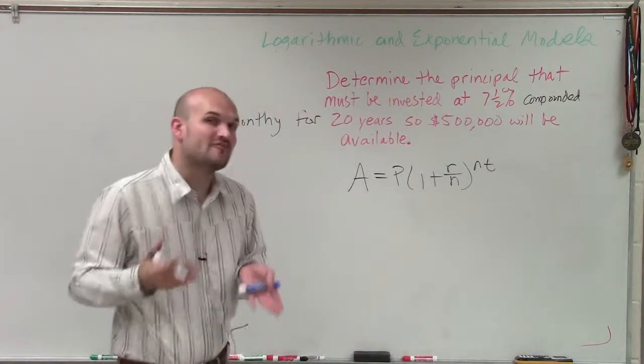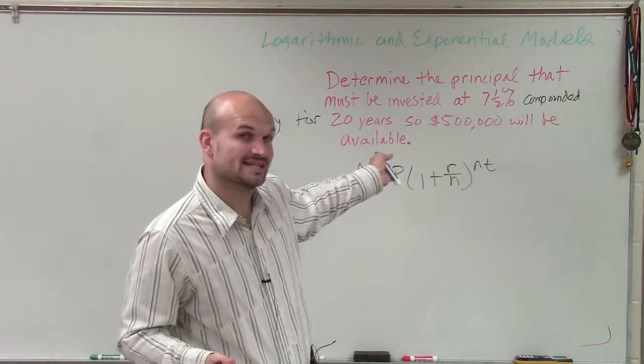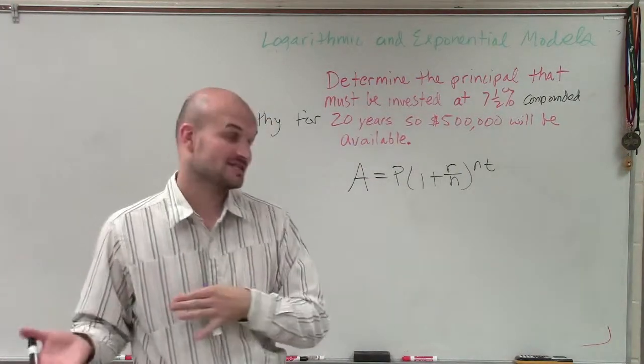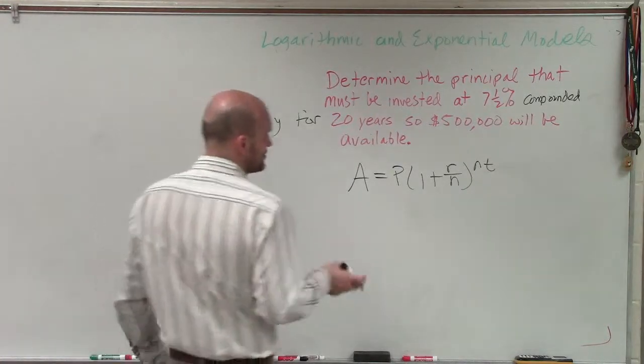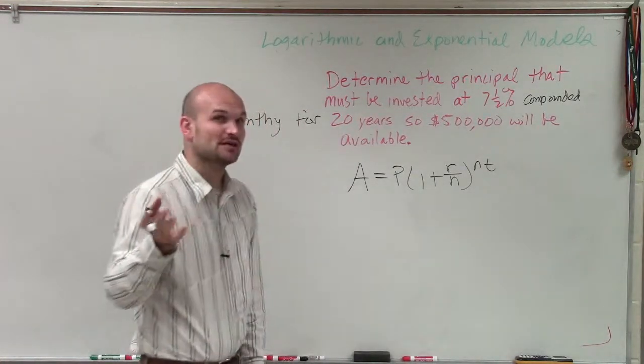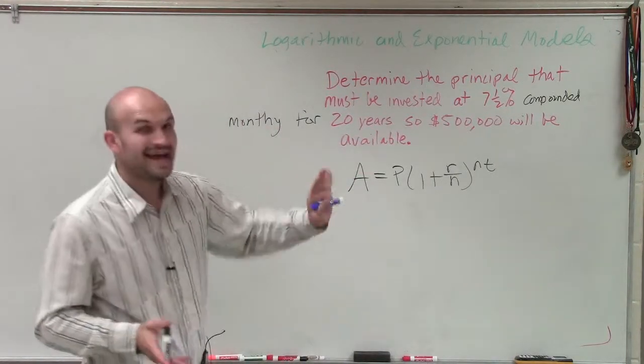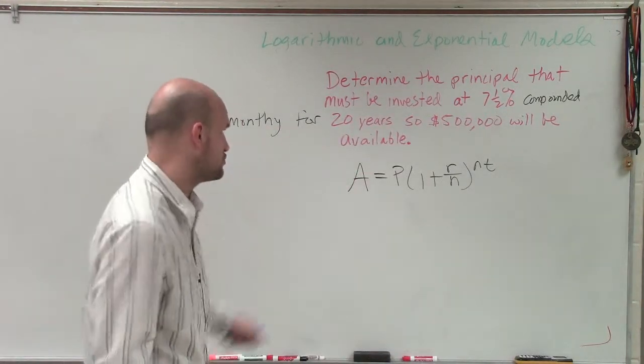All right, remember, A is going to be your final amount. When is the final amount going to be $500,000? P is going to be our principal, what we're trying to solve for, where R is our annual interest rate in decimal form. N is going to be the number of times we compound per year, which is monthly. And then T is going to be the number of years, which is 20.